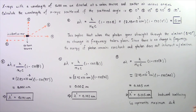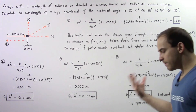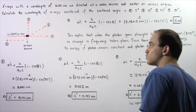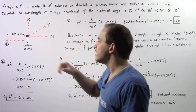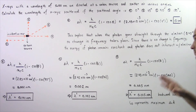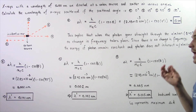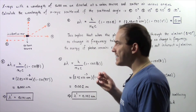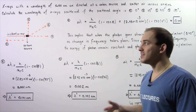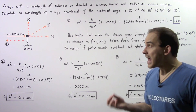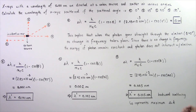This means backward scattering is taking place — the photon bounces and travels in the opposite direction along the same pathway it came in. Notice that when the angle is 180° between the horizontal axis and the scattered photon, that represents the maximum change in wavelength in the Compton Effect.